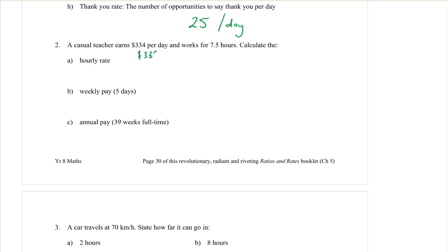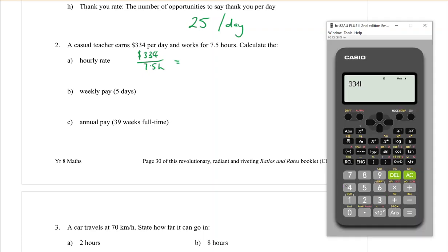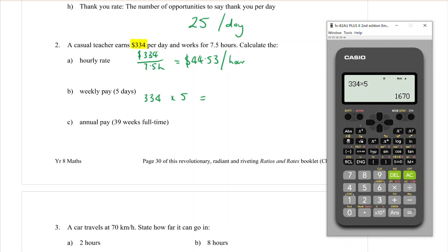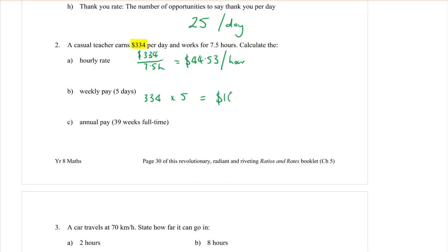A casual teacher earns $334 per day and works for 7.5 days. Calculate the hourly rate. So that would be the amount of money that they earn and the time that it takes to do it, which is 7.5 hours. So if we take 334 and we divide by 7.5, that is, because it's money, two decimal places, $44.53. And that would be dollars per hour. Don't yell out. That's enough.